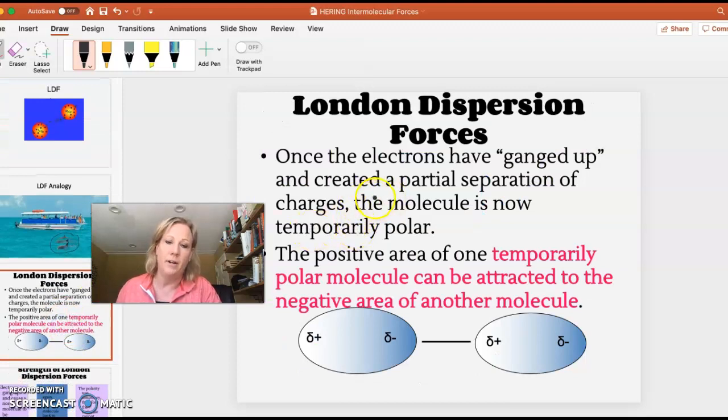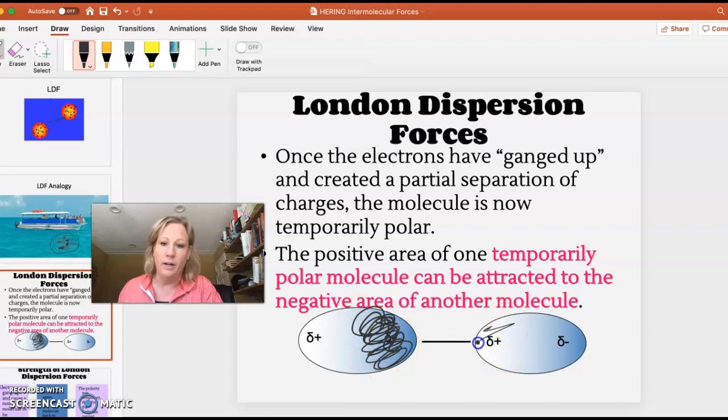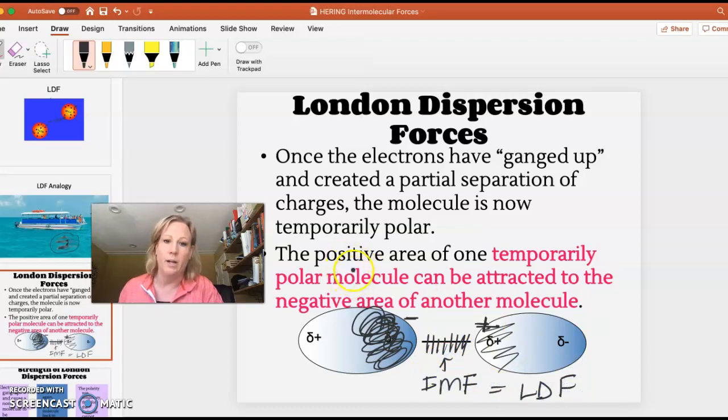Once the electrons have ganged up, like here there'd be more electrons and it's darker because there's more electrons over here and less over here. So this is the negative and this is the positive end of the molecule of two different molecules. This is the IMF, this is the London dispersion force, which we call LDF.